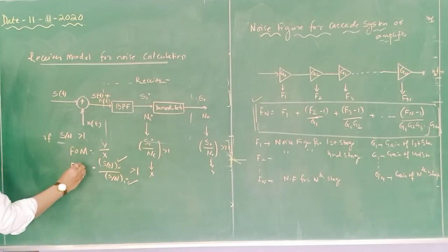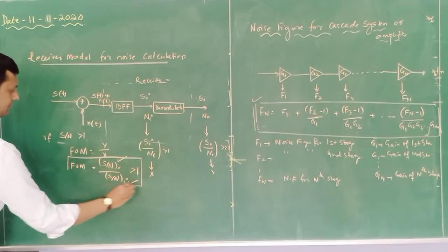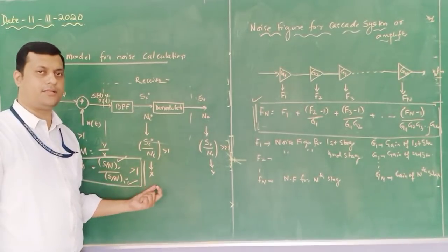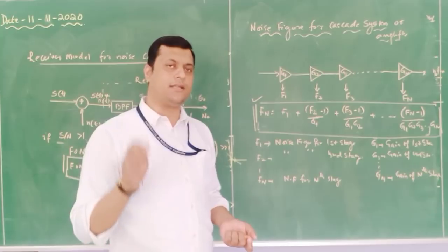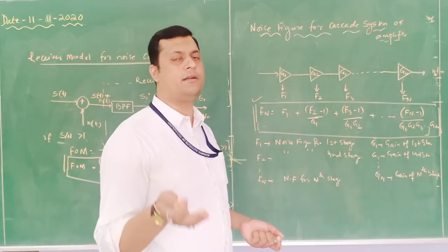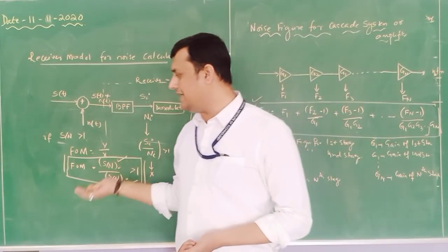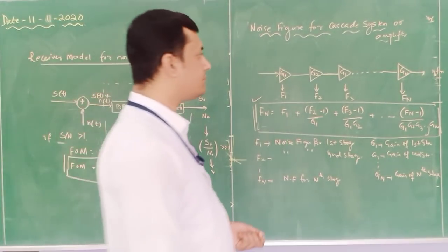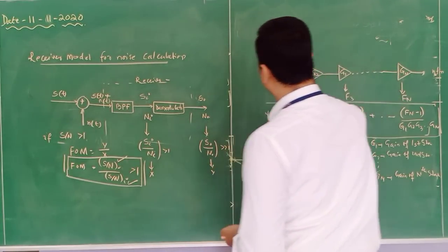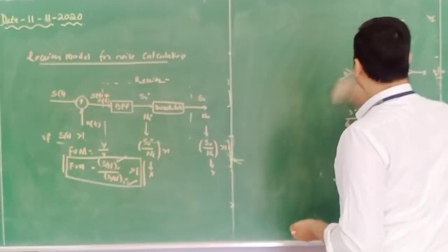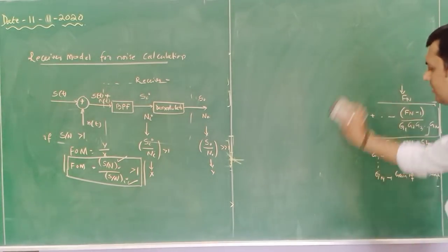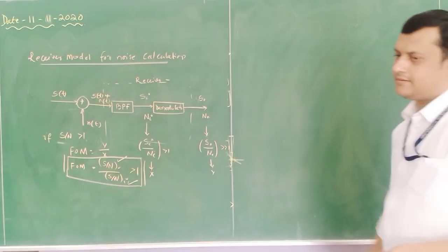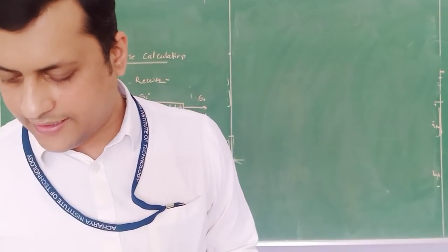Figure of merit is represented by γ (gamma) or FOM. If output SNR is greater than input SNR, figure of merit is greater than 1. If figure of merit > 1, the performance of the system is good and we can recover the message signal easily. If the output SNR is less than the input SNR, the effect of noise is so high that it deteriorates the whole communication process.